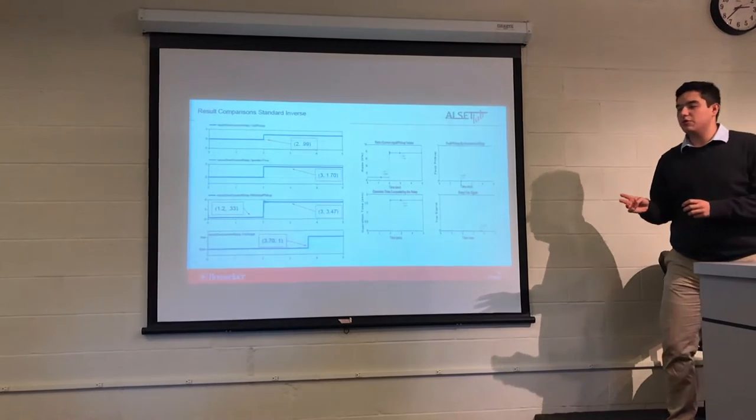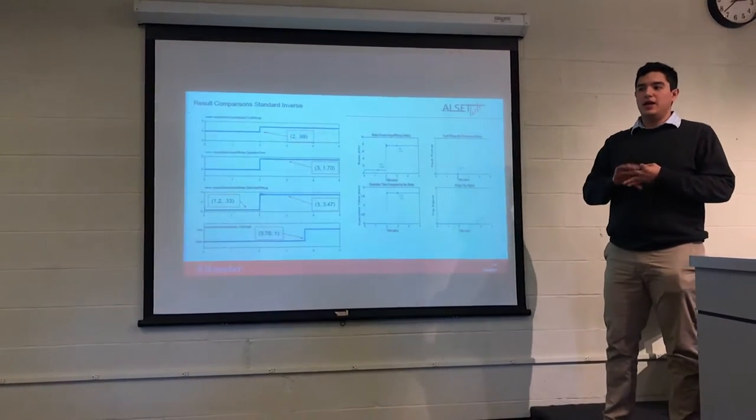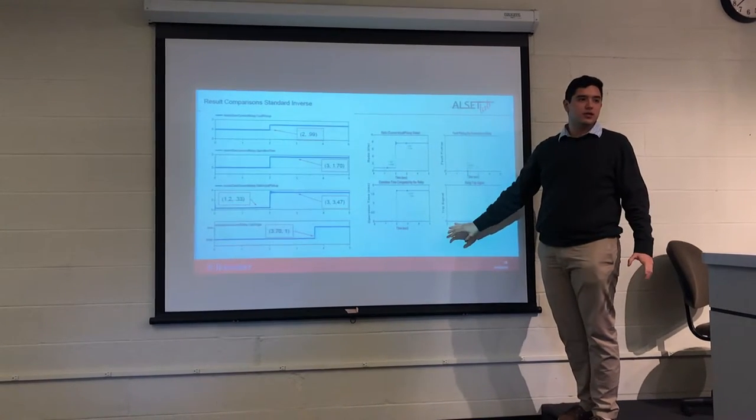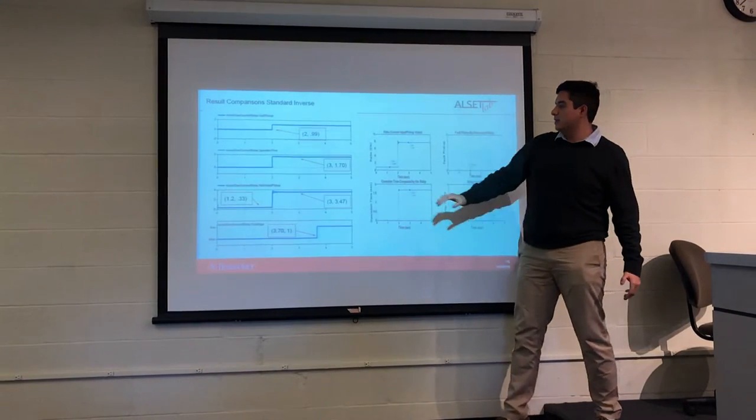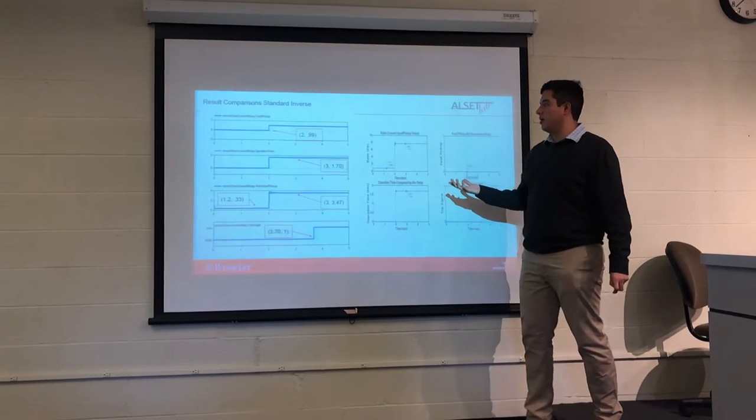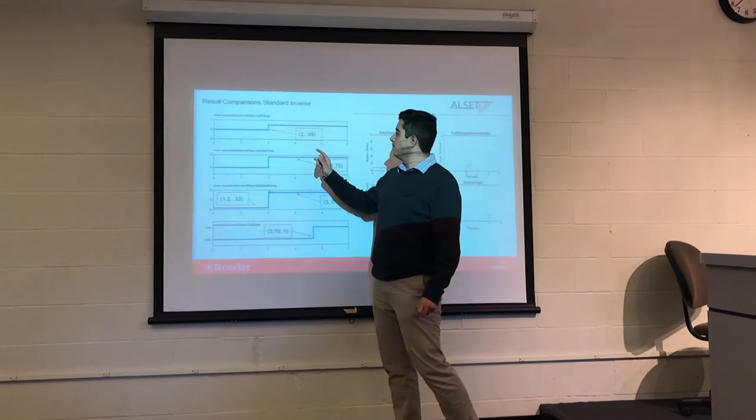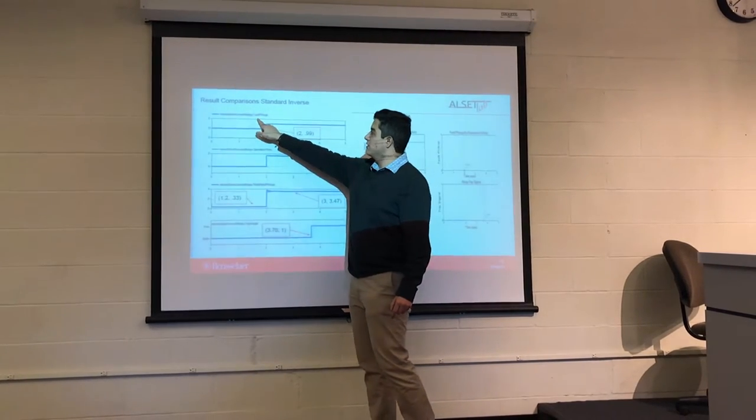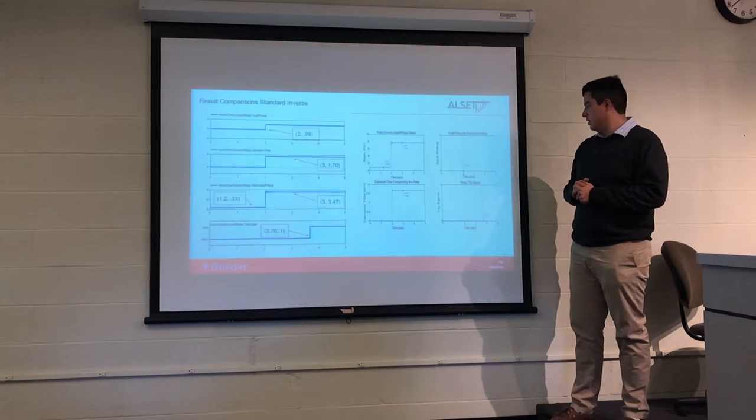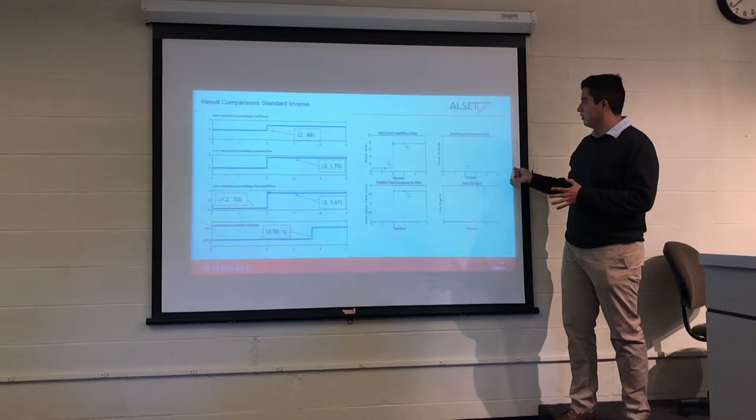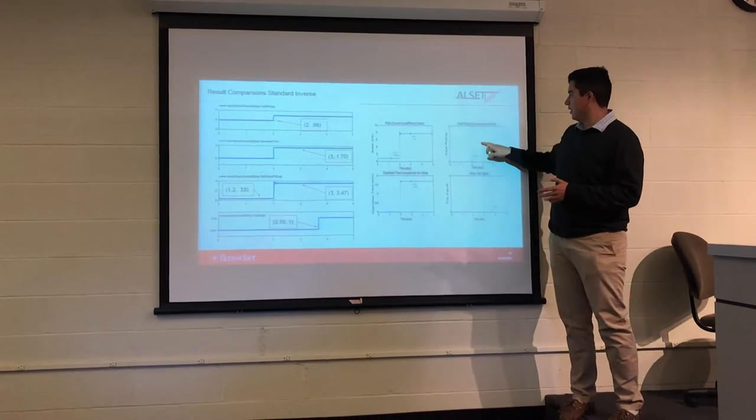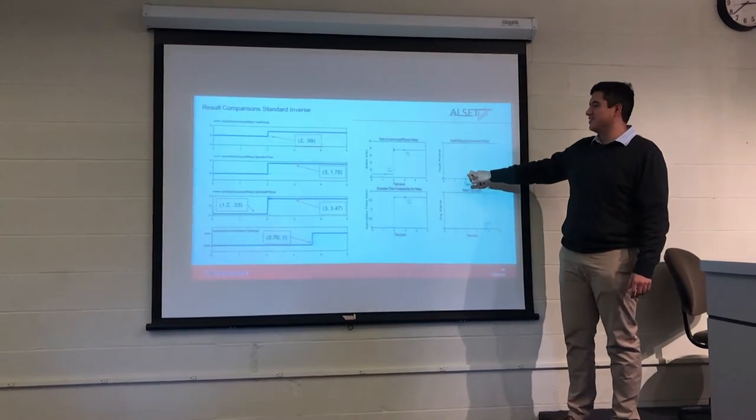So we would go through three result comparisons for standard, very, and extremely inverse relays. This side is the one from MATLAB that was done in the paper, and this is the one from Modelica. As you can see, all of them are the same. For example, this is the fault pickup that happens at 2, that was something that we already knew, and the fault pickup that kind of makes the top right.